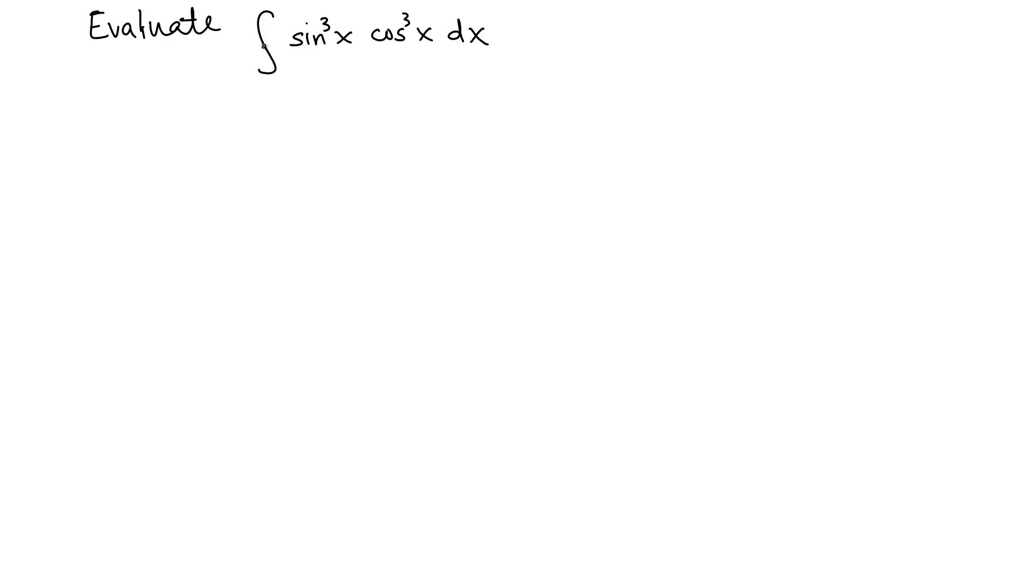Evaluate the integral of sine cubed x times cosine cubed x dx. In another video I assumed sine x is u and cosine x, just one copy of cosine x, is du and converted the remaining cosine into sine. But in this case I want to convert cosine as u and sine as derivative of u.